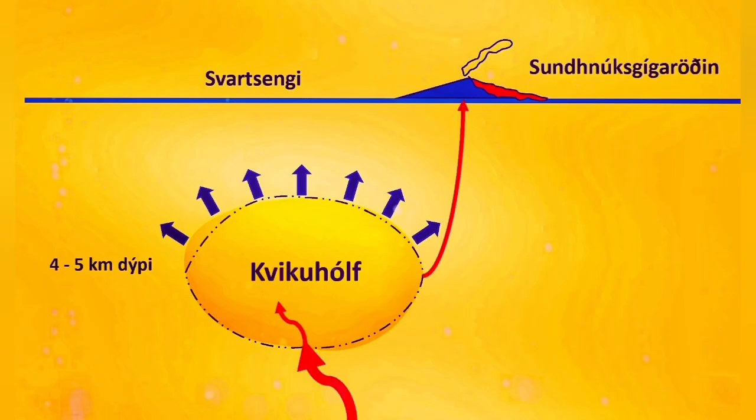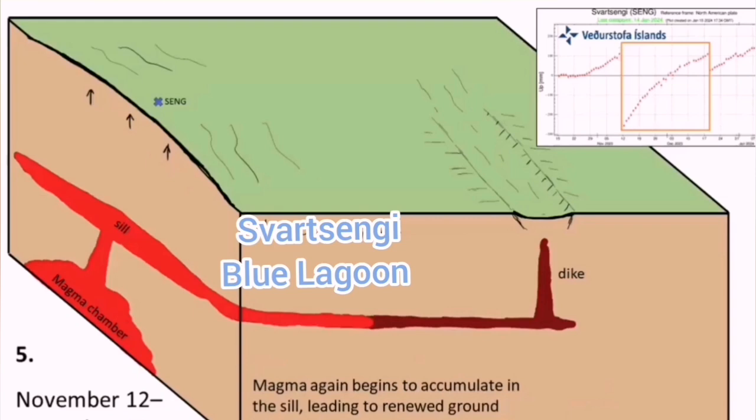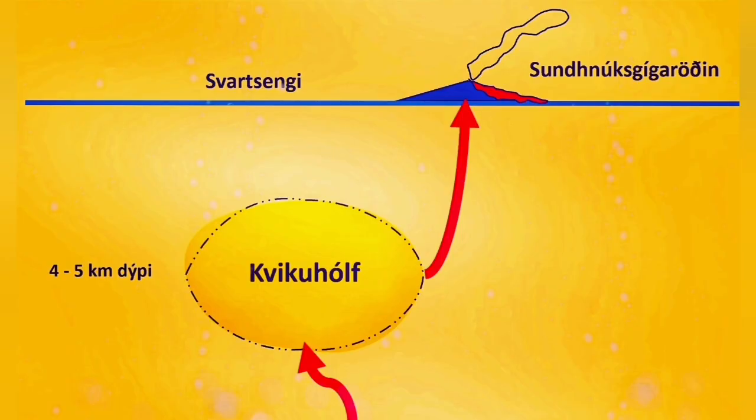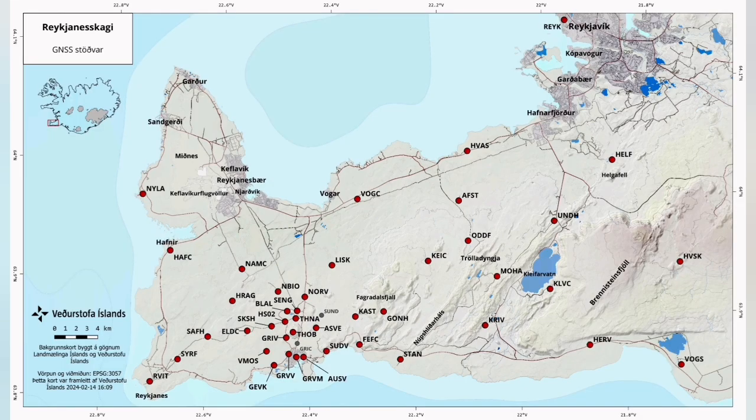When the entry of material is more than the exit, the land starts to swell up. We measure these things by GPS data. The moment that the entry of the magma to the reservoir equals the exit of the material, the land uplift or rising stops.